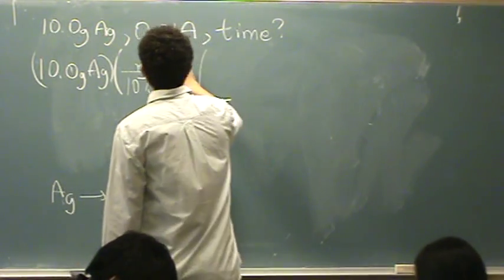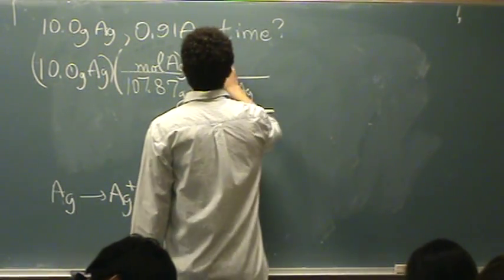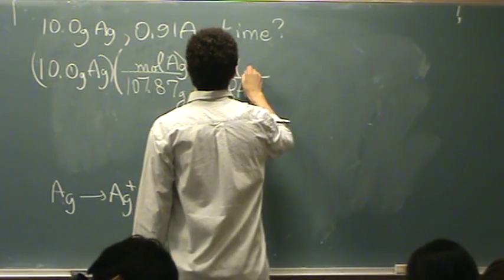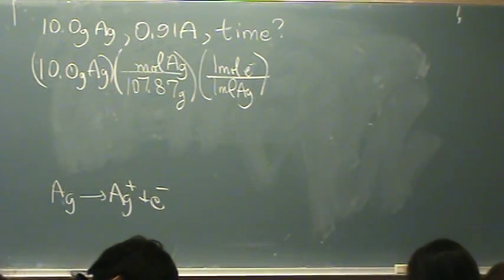So, because this is moles of silver, I need one mole of silver for every one mole of electrons. Now I'm in electrons. I'm getting closer to current.